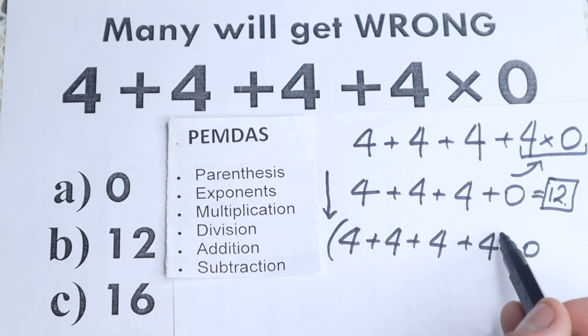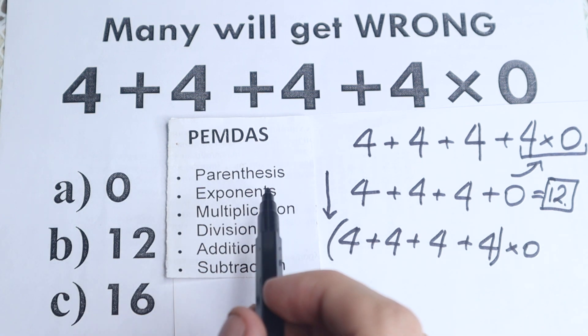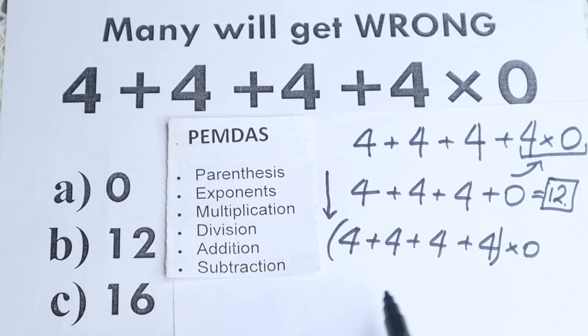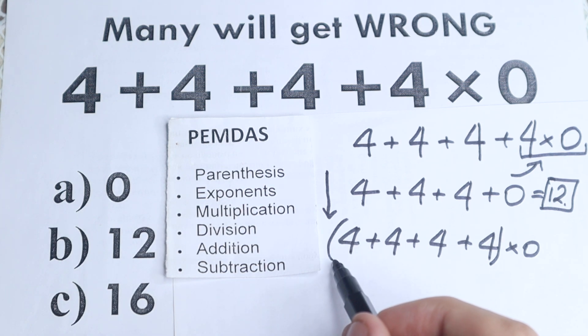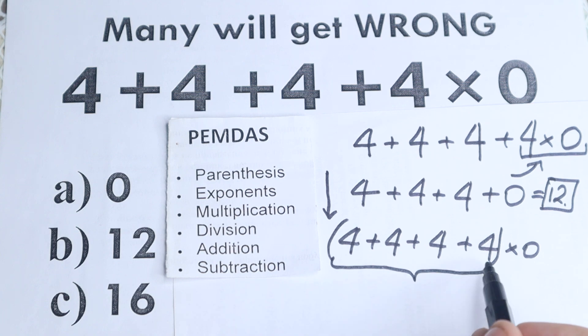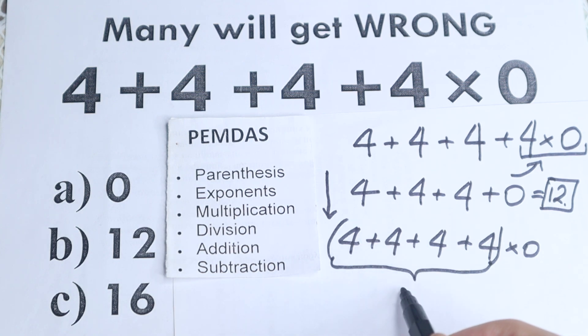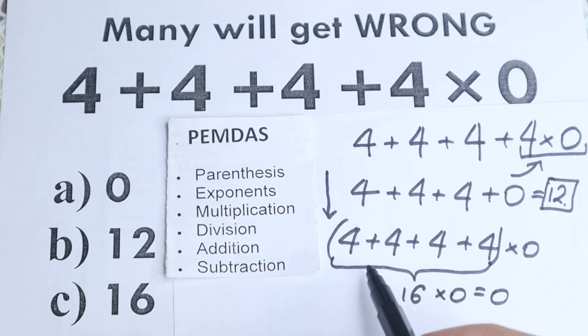But if you want to multiply by 0, you just need to put parentheses right here. And then your correct answer will be 0, because you need to start from parentheses. If you start from this parentheses, your first step is this parentheses. Then you will have right here, the sum gives us 16. And the next step times 0. So this gives us 0. But in our case, we don't have this parentheses.